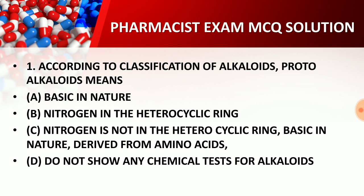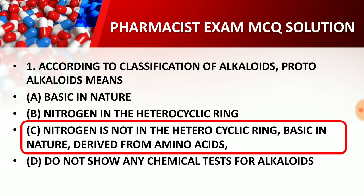The right answer for question one is option C. According to the classification of alkaloids, protoalkaloids means nitrogen is not in the heterocyclic ring, they are basic in nature, and they are derived from amino acids. Question one answer is C. Let's go to question number two.